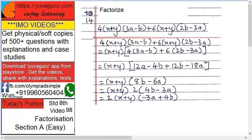Next, factorize: 4(x + y)(3a minus b) plus 6(x + y)(2b minus 3a). Take (x + y) as common, leaving 4(3a minus b) plus 6(2b minus 3a) inside the bracket. Expanding: 12a minus 4b plus 12b minus 18a, which simplifies to 8b minus 6a. Taking 2 as common: 2(x + y)(4b minus 3a). That can also be written as 2(x + y)(minus 3a plus 4b). These are the factors.